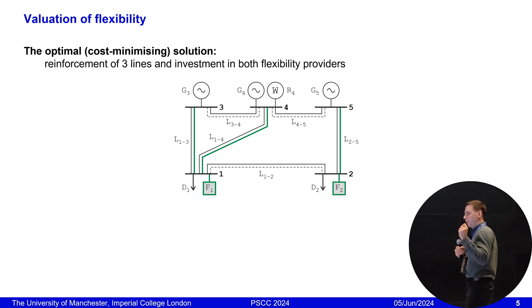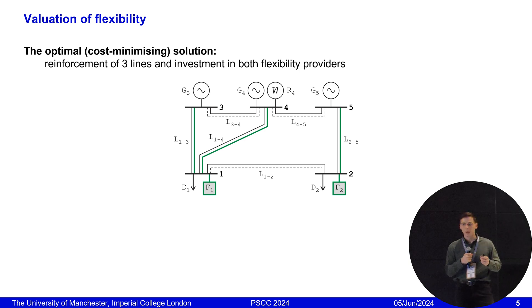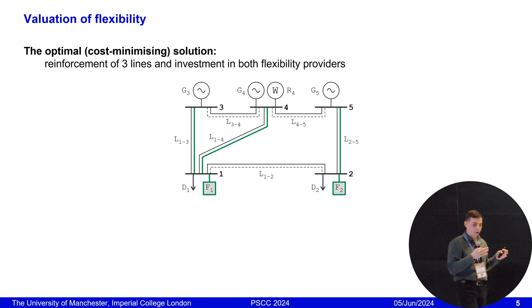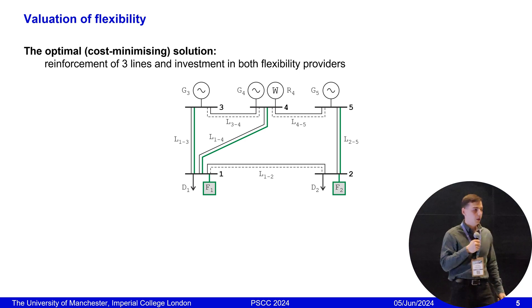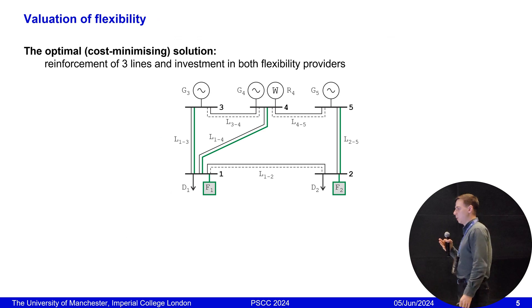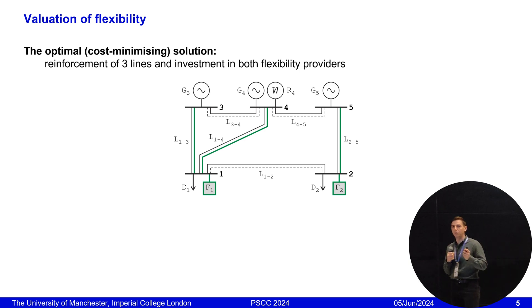Coming back to this simple five-bus system, here you may see the optimal solution. The optimal investment decisions are shown in green color. You may see that our solver converged and says you should build these three lines and invest in both flexibility providers. And if we believe the solver that this solution is optimal, we might be happy. But actually, we argue in this work that it is not enough to solve the planning problem once.